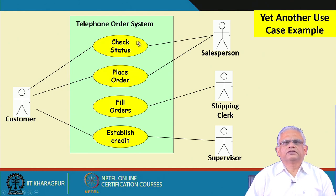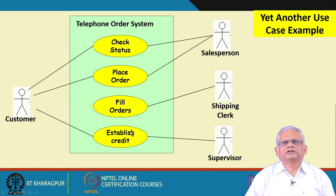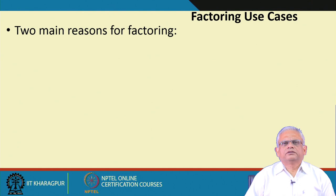The customer may use a telephone interface while the salesperson sits at a terminal with a keyboard. The customer can place an order on the telephone order system, and so can the salesperson. The shipping clerk checks what orders have been placed, fulfills the orders, and enters the details. During placing an order the customer may establish credit, and a supervisor may check the credit establishment.